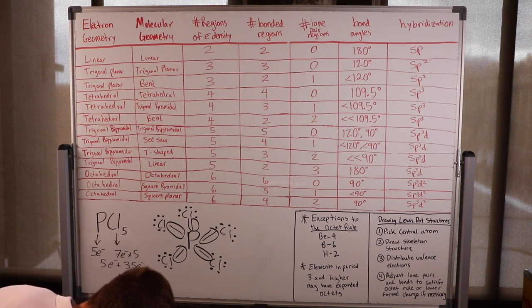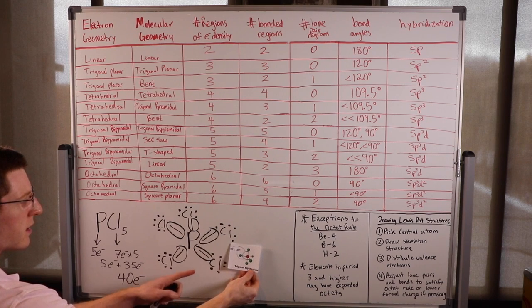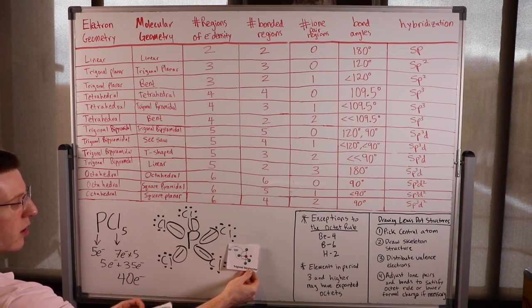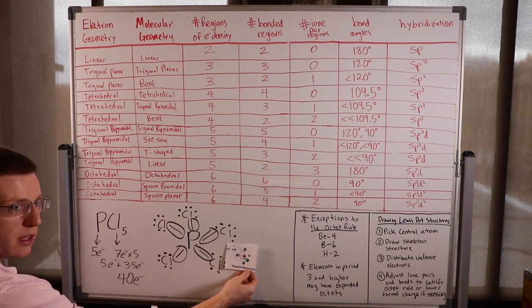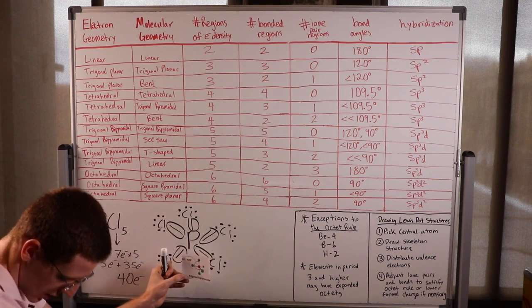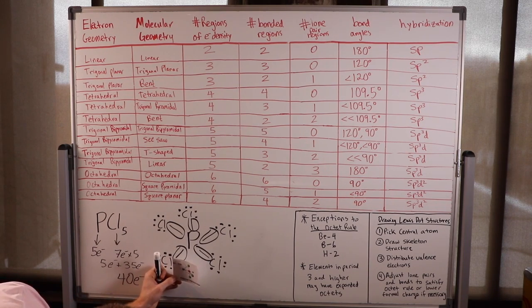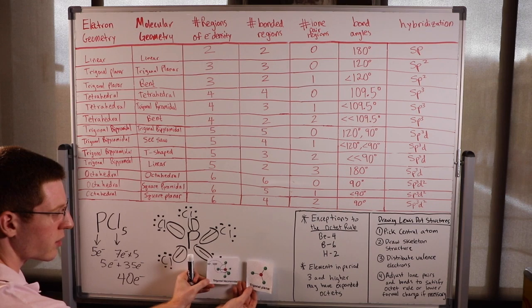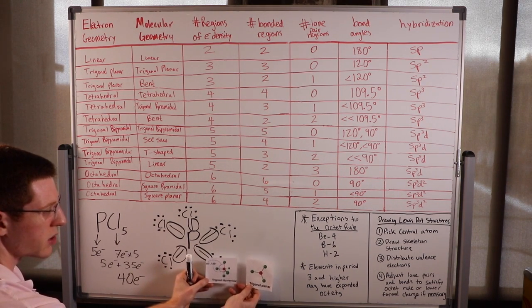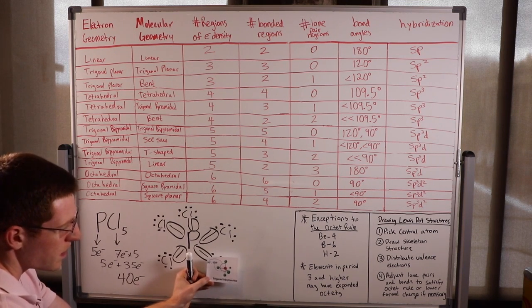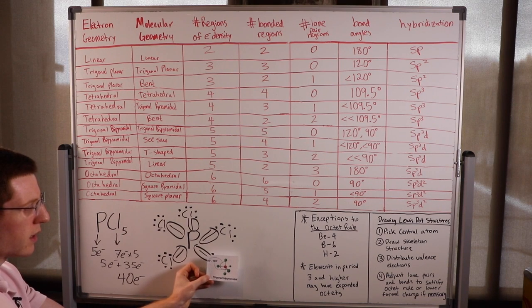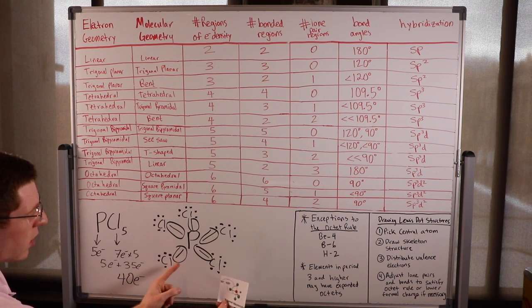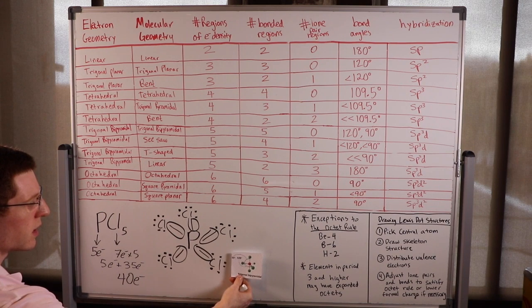That means the electron geometry is trigonal bipyramidal and the molecular geometry — the actual shape — is trigonal bipyramidal as well. The phosphorus is the red circle in the middle and the chlorines are the green circles. It sort of looks like trigonal planar with a stick through it. The angles between the triangle part are 120 degrees, but the angle along the stick is 90 degrees. This is the shape that maximizes the distance between all of these bonds.